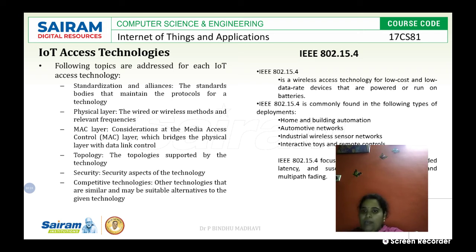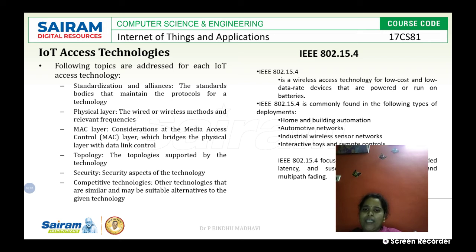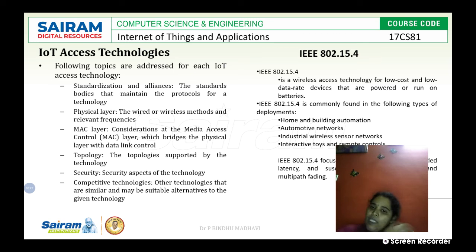The MAC layer — medium access control layer — is a bridge between the physical layer and the data link layer. The physical layer also identifies smart objects within the environment. The MAC layer bridges these two layers and is responsible for coordination of access among devices. It coordinates and shares data access between the physical layer and the data link layer, acting as a communication medium.